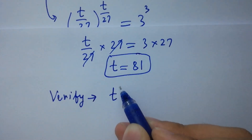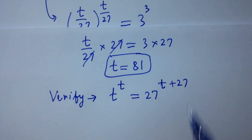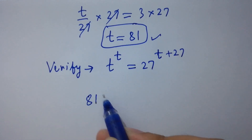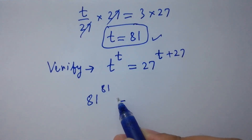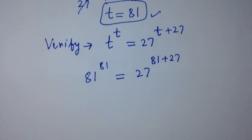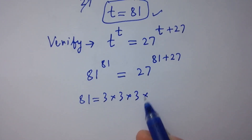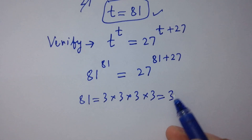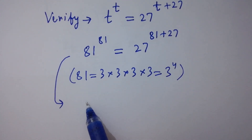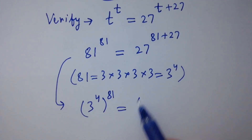Verify: t to the power t equals 27 to the whole power t plus 27. Put the value of t which is 81: 81 to the power 81 equals 27 to the power 81 plus 27. Since 81 equals 3 to the power 4, it will be 3 to the power 4 to the whole power 81 equals 27, which is 3 cubed, to the whole power 108.